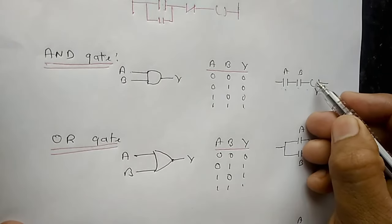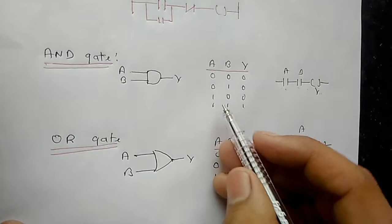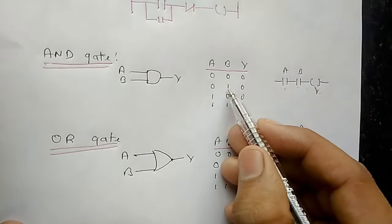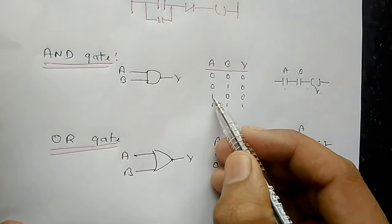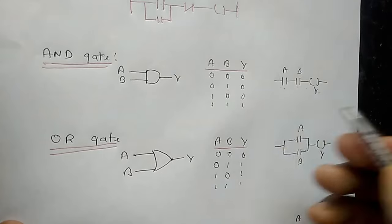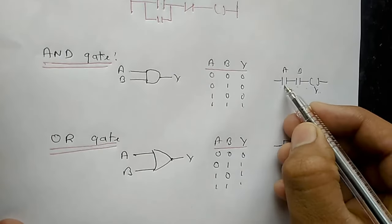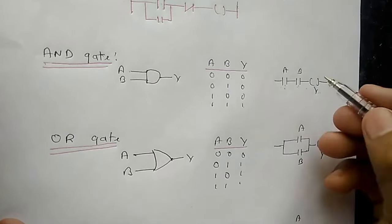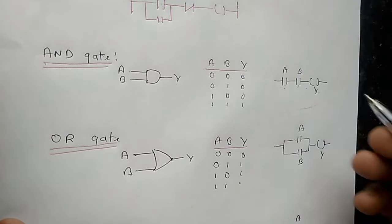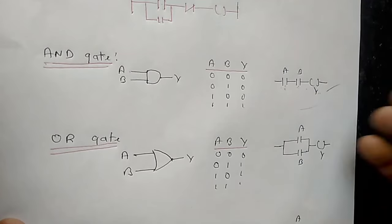Suppose if you put a bulb here, then the bulb will not glow for this state, and will not glow for this state either. But if you apply power on both A and B, the bulb will glow. This is the concept. If you put this circuit in a simulator or computer software, it will work.